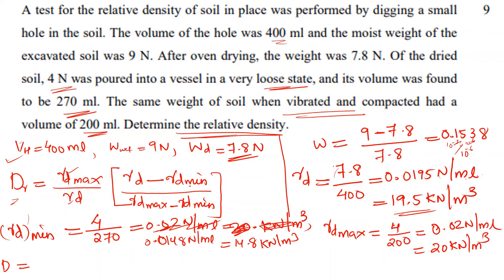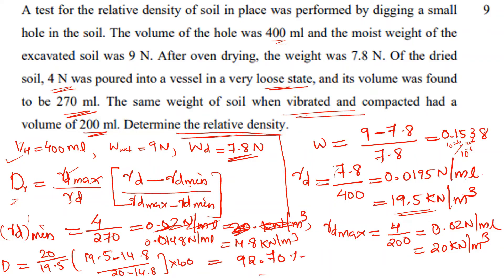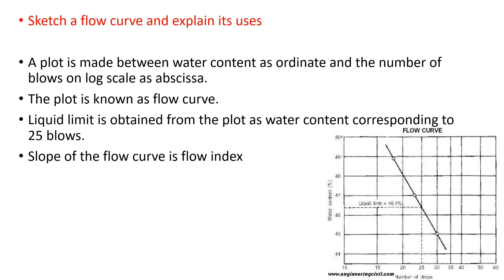Substituting into the relative density equation: Dr = (γd_max / γd) × (γd − γd_min) / (γd_max − γd_min), using γd_max = 20, γd = 19.5, γd_min = 14.8 kN/m³.